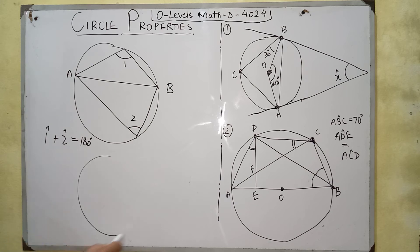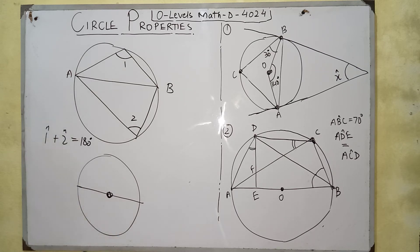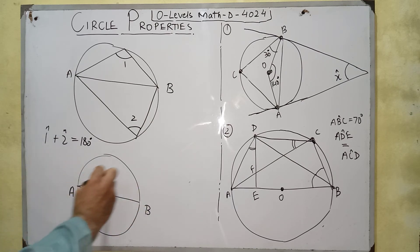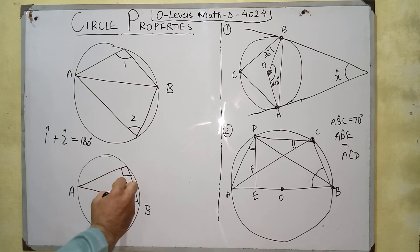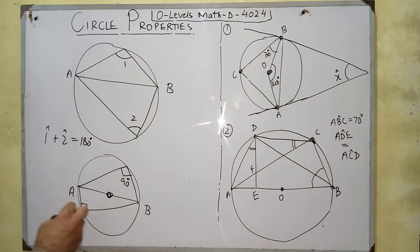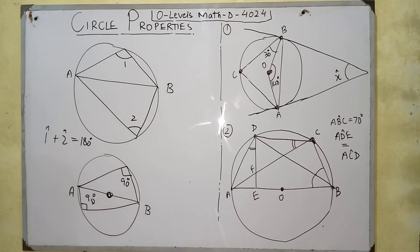The next property involves the diameter. A diameter is also a chord, but it is a special chord that passes through the center of the circle. If diameter AB subtends an angle at the circumference of the circle, that angle is always a right angle — always equal to 90 degrees. Any angle at the circumference made by a diameter is always 90 degrees.